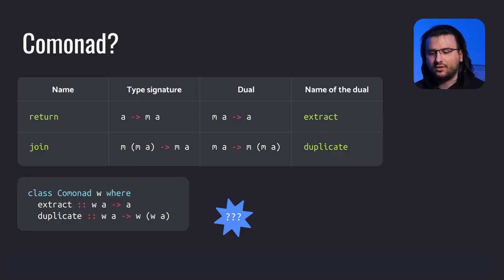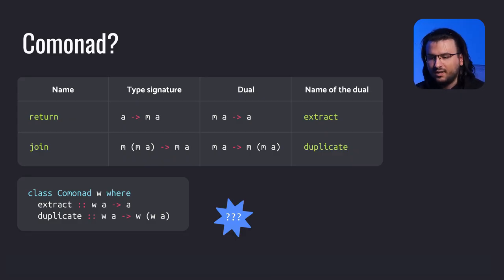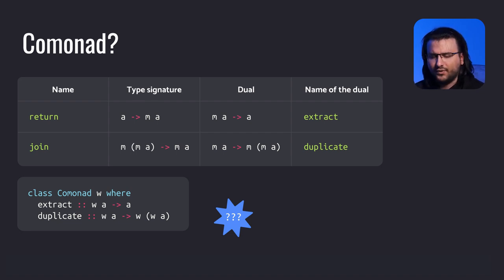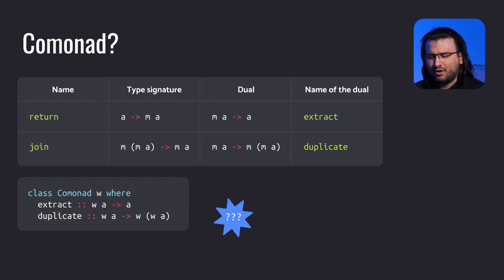And so we define the comonad type class as follows: it accepts the type parameter w and contains the aforementioned functions. Fun fact — the comonadic type variable is commonly denoted with w because it's an m upside down.